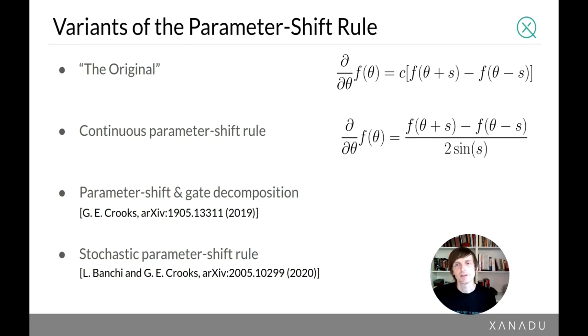There's actually a few variants of the parameter shift rule. The one I've been going through is I would call the original. And here again, it depends on the particular gate. But for a particular gate, there is a recipe which consists of an S value and a C value, which are typically pi over 2 and 1 half respectively. But you shift forward by S and backwards by S and multiply by C, but that S is fixed.